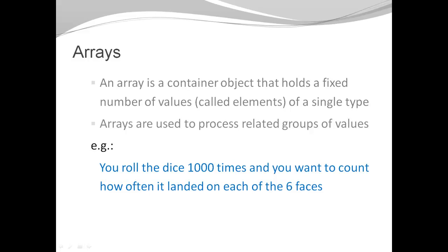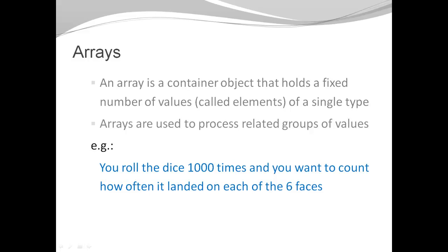One possible way to implement that is by creating six local variables. You could have a switch statement to decide which of your variables should be incremented at any given time. A more elegant way would be by using an array. Another example: you might have a four-digit number and want to isolate the single digits. You could create four individual variables, but a better way is to use an array.